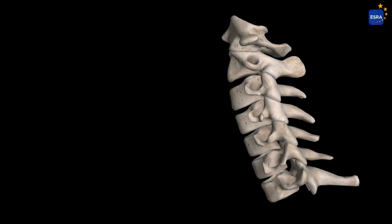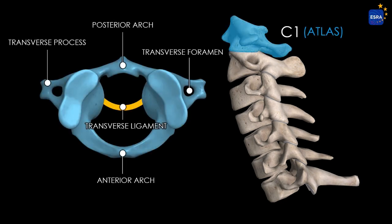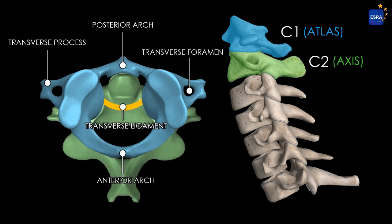The C1 vertebra, atlas, lacks both a vertebral body and a spinous process. Its structure consists primarily of two lateral masses connected by anterior and posterior arches, forming a bony ring. This configuration allows for cranial flexion and extension movements, such as nodding yes. It articulates superiorly with the occipital condyles and inferiorly with the axis, C2.